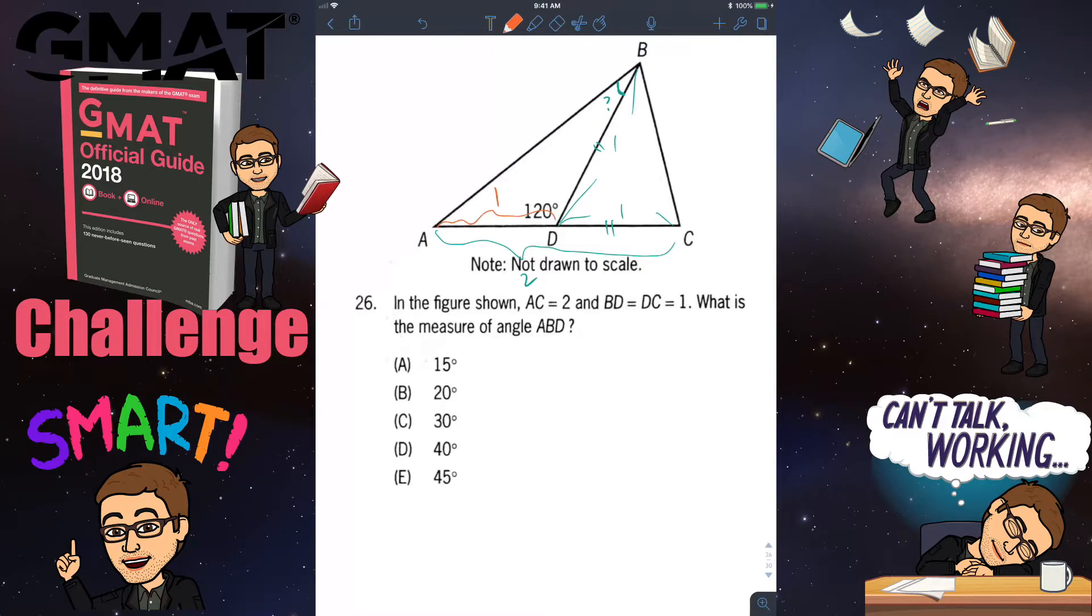AD has to be 1. As a result, AD has the same length as DC as BD.